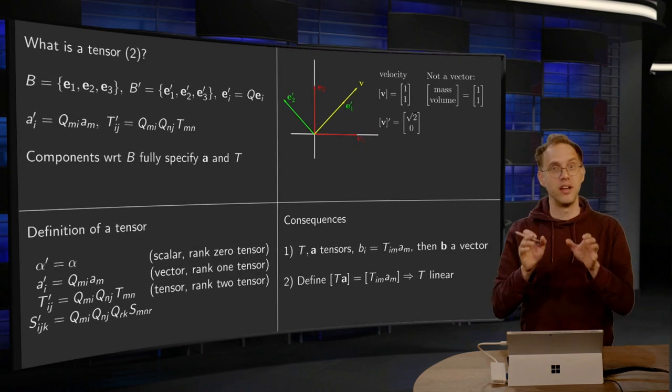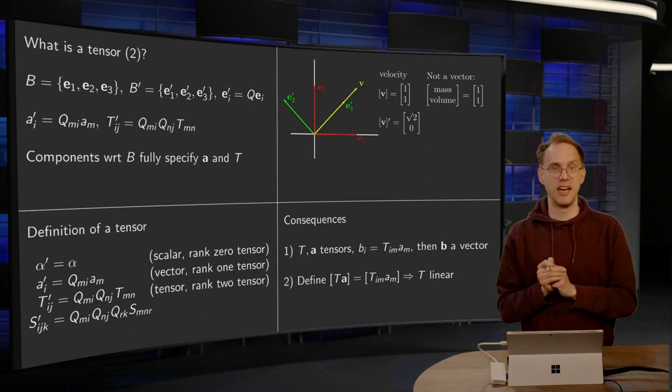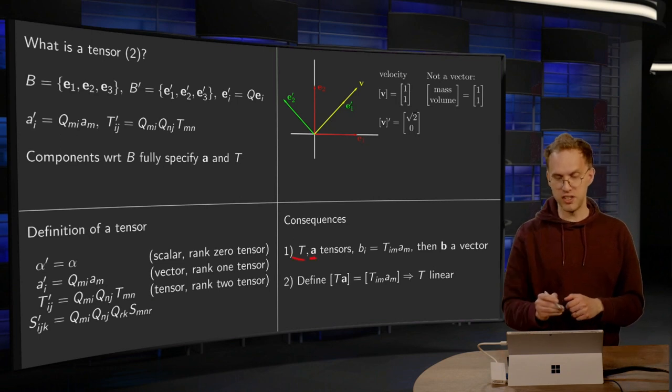Well, yes, it is. So this transformation rule, in fact, implies the linearity. So why is that? If we have, say,